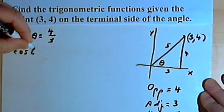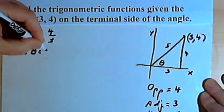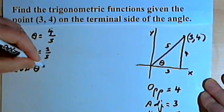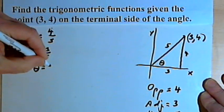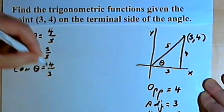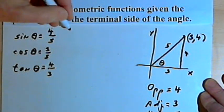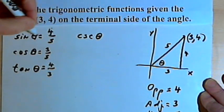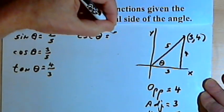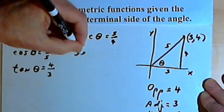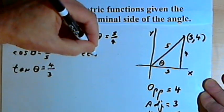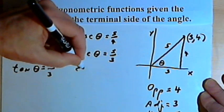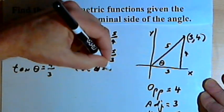The cosine of theta is the adjacent over the hypotenuse — that's 3 over 5. And the tangent of theta is going to be the opposite over the adjacent, or 4 over 3. For the reciprocal functions: the cosecant of theta is the reciprocal of the sine, so that's 5 over 4. The secant, the reciprocal of the cosine, is 5 over 3. And the cotangent is going to be 3 over 4.